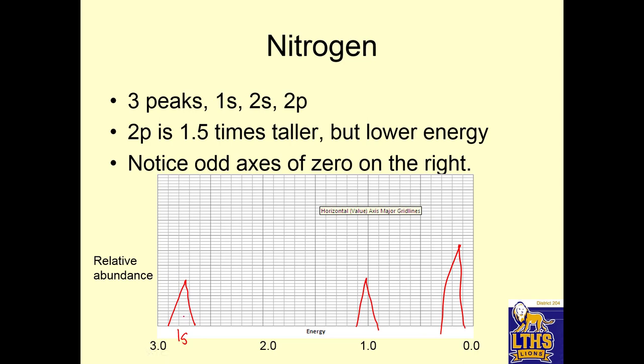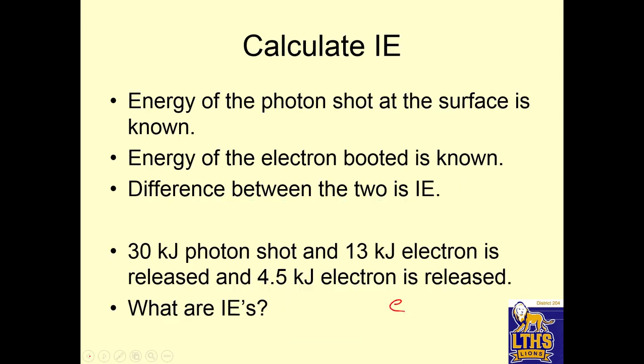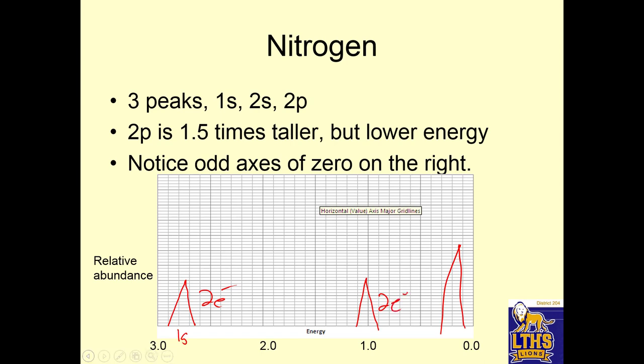So I would have one peak at this height, another peak at the same height. This one has three electrons, so it should be one and a half times as tall. So there are three peaks: 1s, 2s, 2p. So for example, this could be 1s which is the most energy, and then this could be 2s, and then the 2p one would be one and a half times as tall. So 2p is one and a half times taller, but it's lower energy. Notice this energy is closer to zero. Notice the odd axis of zero on the right. This is because this is the nucleus.